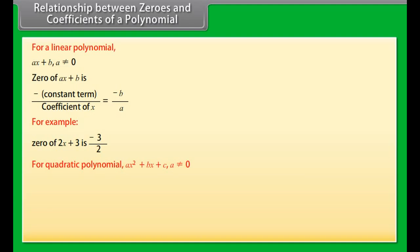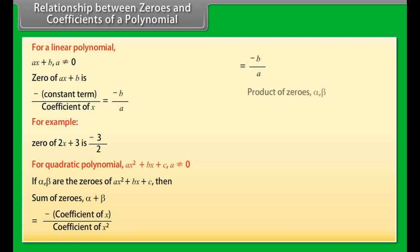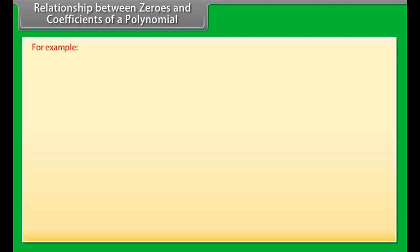For a linear polynomial ax + b, where a ≠ 0, the zero of ax + b is minus the constant term upon the coefficient of x, which equals −b/a. For example, the zero of 2x + 3 is −3/2.